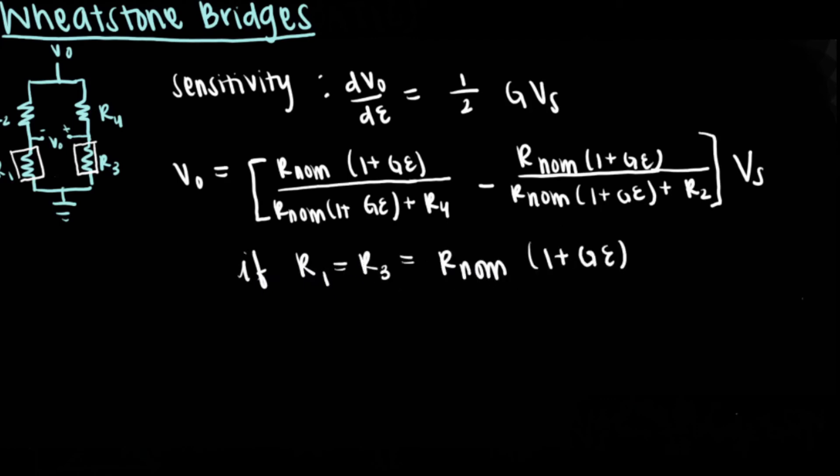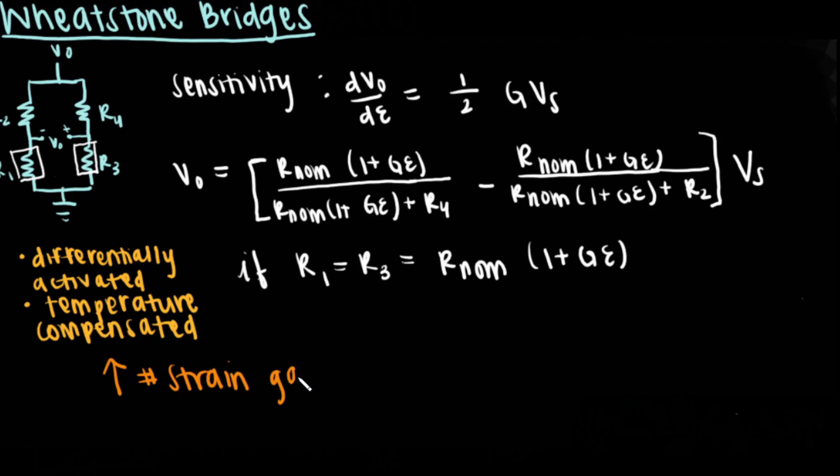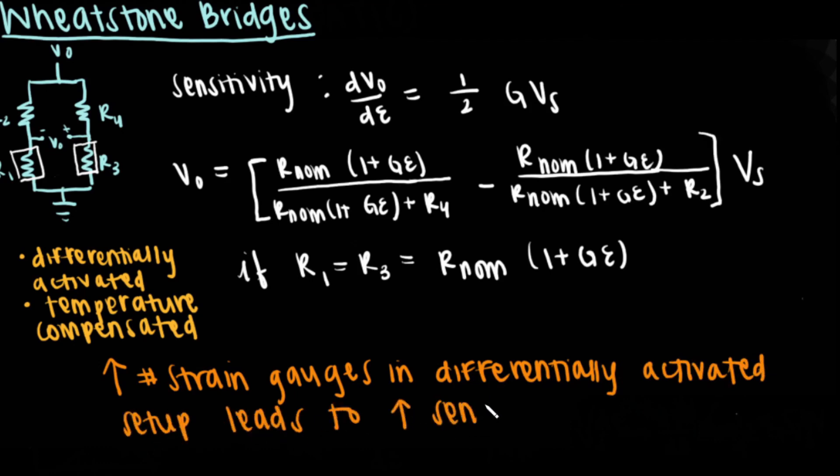As you can see, increasing the number of strain gauges in a differentially activated setup increases the sensitivity of the wheatstone bridge to changes in length. Double differentially activated strain gauges increase the sensitivity even more. Don't forget temperature compensation is important. Ideally, the temperature dependence is cancelled out in strain gauge pairs like in this example. I'm sure you're all set to tackle any future wheatstone bridge problems. I believe in you.